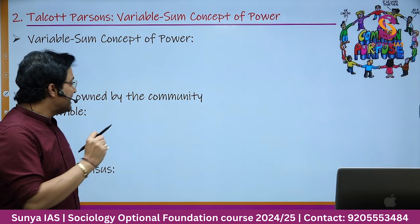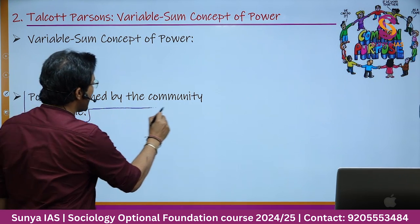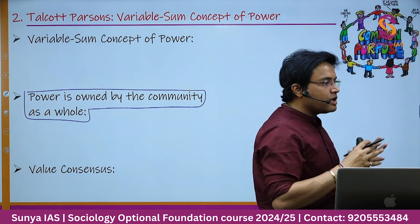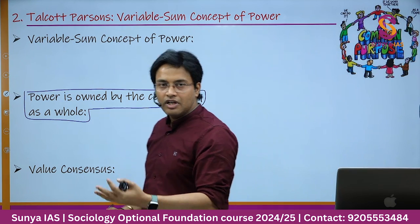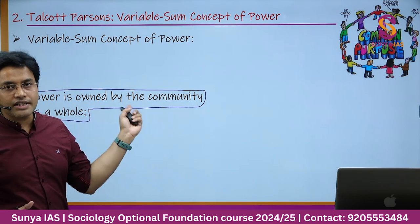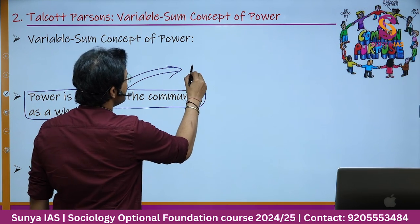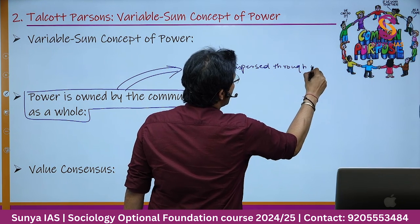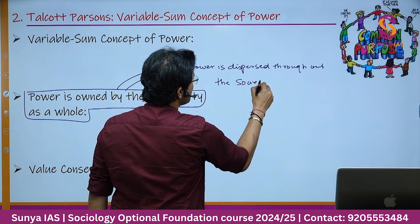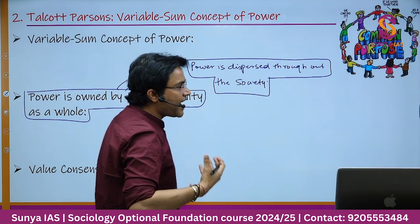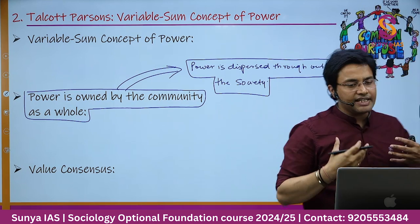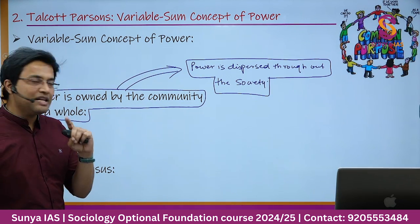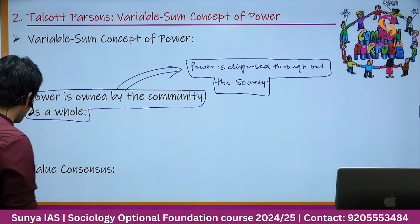First, Talcott Parsons says that power is owned by the community as a whole — it is dispersed throughout the society. Unlike the constant sum concept where some group or individual holds more power compared to others and power is not dispersed, here power is not held by a single person but is owned by all members of the community.